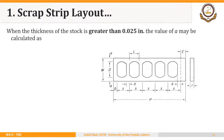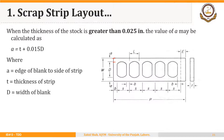When the thickness of the stock is greater than 0.025 inches, the value of A is found using a formula. A is the distance from the edge of the blank to the side of the strip. D is the thickness of the strip and D is the width of the blank. The basic idea is that this distance from the edge of the blank to the edge of the sheet should be greater than the thickness of the sheet.